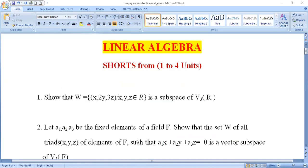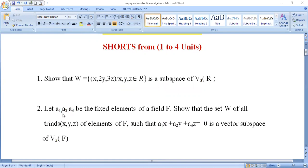Second question: Let a₁, a₂, a₃ be fixed elements of a field F. Show that the set W of all triples (x, y, z) with elements from field F such that a₁x + a₂y + a₃z = 0 is a vector subspace of V₃(F). This is also a very important question.